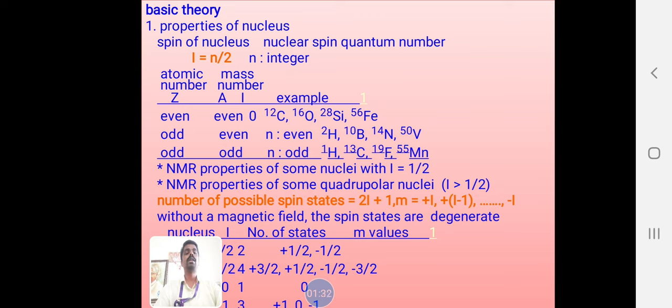Also, when both Z and A are odd numbers, that's also active in NMR. So we can calculate proton NMR H-1, C-13, we can calculate F-19 through these techniques.